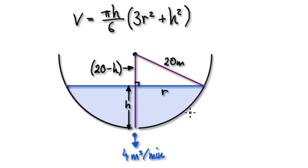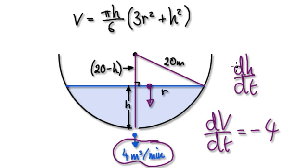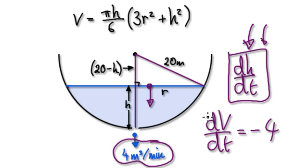Looking at this, we are losing volume, so dV/dt is -4. In this case, what we're after is dh/dt. We were given dV/dt.